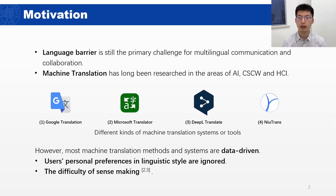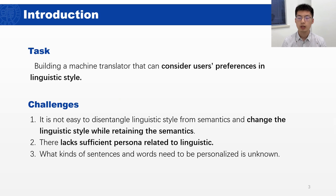Machine translation has been a very useful tool to assist multilingual communication and cooperation. In recent years, by taking advantage of the exciting developments of neural networks and deep learning, the accuracy and speed of machine translation has been continuously improved. However, most machine translation models and systems are data-driven. They tend to select a constant response present in training data, where a user's preferred linguistic style — which is important for translation comprehension and user experience — is ignored.